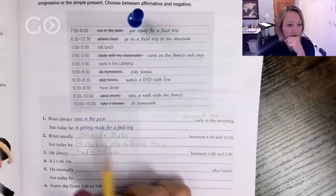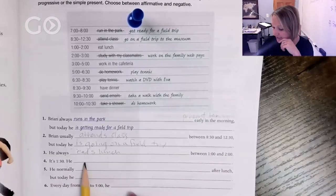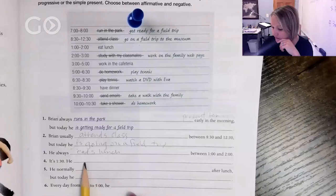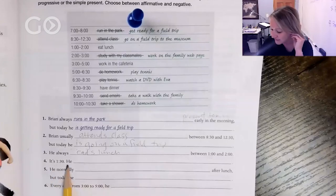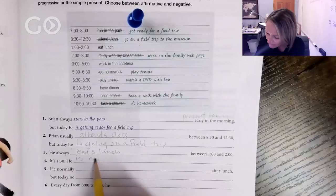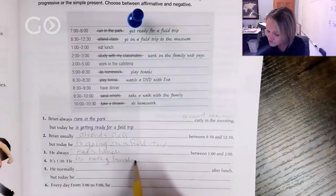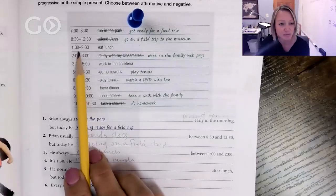All right, great. So it's 1:30, he blank. He always eats lunch between one and two. It's blank, 1:30. He is eating lunch, right? We're just making that guess what he's doing because he normally eats lunch between one and two. So we're gonna say he's eating lunch.